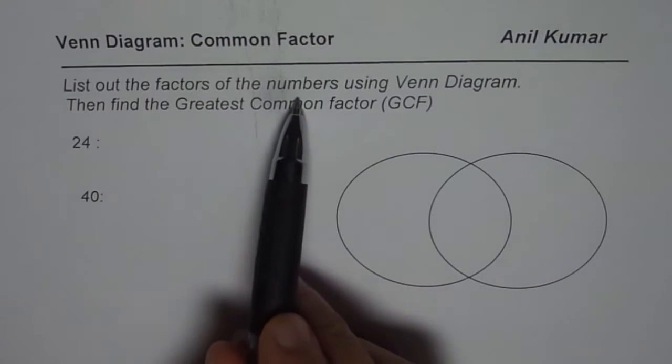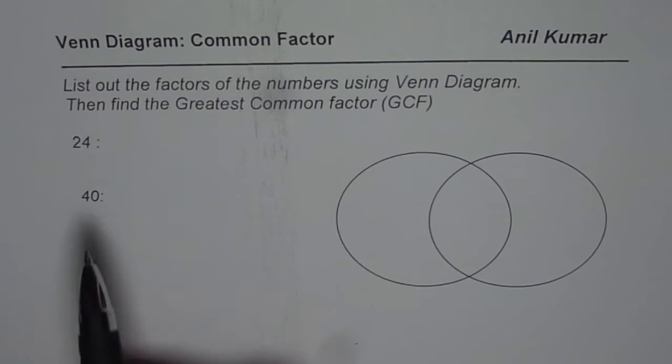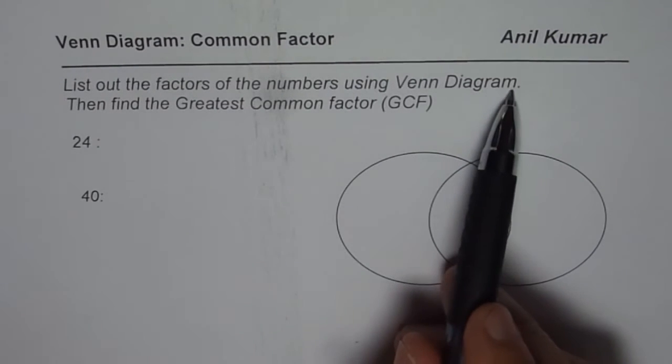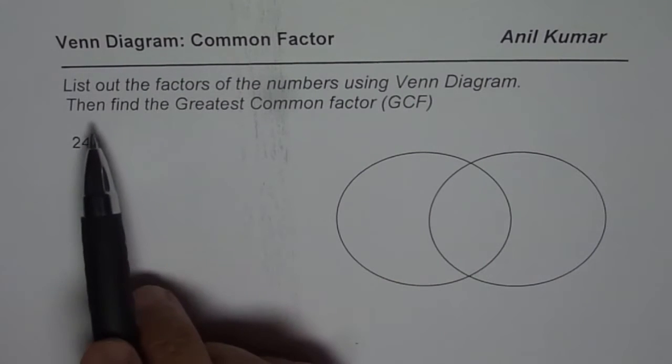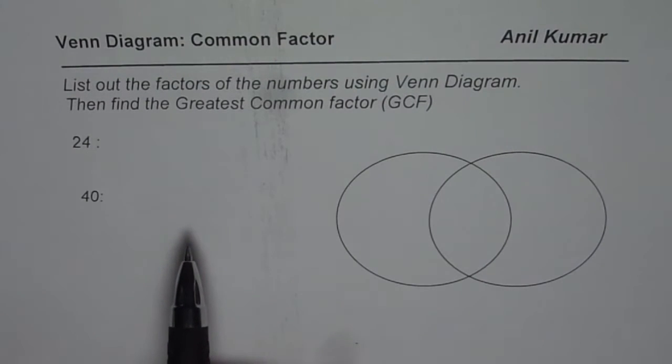to list out factors of the numbers. These are the two numbers given to us, 24 and 40, using Venn diagram. We have to use this Venn diagram, then find the greatest common factor. So first step here is to